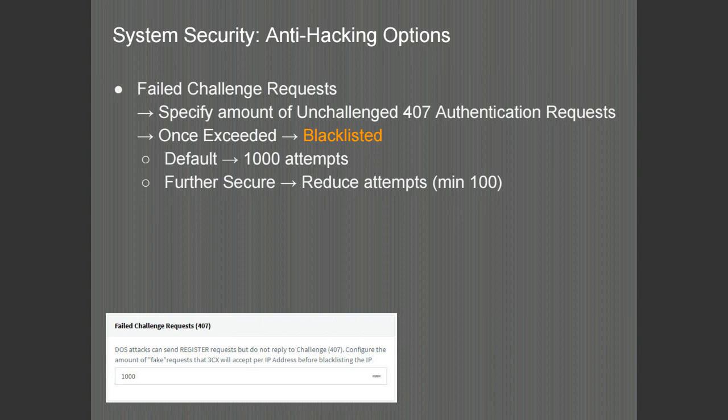On the same anti-hacking module page, you will be able to specify the amount of unchallenged 407 authentication requests. When a request is made to the PBX, the PBX will respond with a 407 authentication request. A bogus host trying to penetrate the PBX will not respond to the 407 and will keep sending new challenges, causing the PBX to keep ports open and hog resources. We limit this to a default of 1,000 attempts. You can further secure this by reducing the attempts to a minimum of 100.